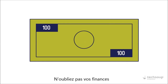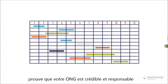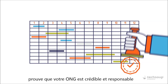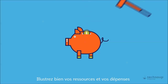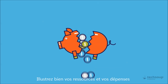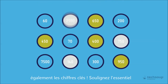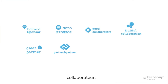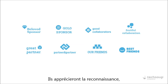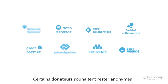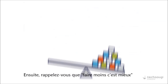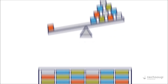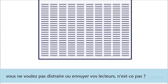Don't forget about the money. Presenting your budget openly proves your NGO is credible and accountable. Show both the sources of your budget and spending, and highlight the most important numbers. Mention your sponsors, partners, collaborators, and friends — they'll appreciate the recognition, but be sure to ask, as some donors wish to remain anonymous. And remember: less is more. You don't want to distract or bore your readers.